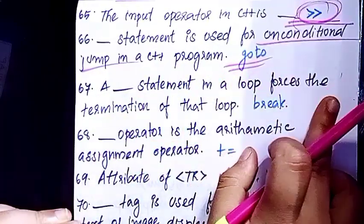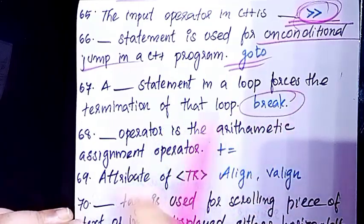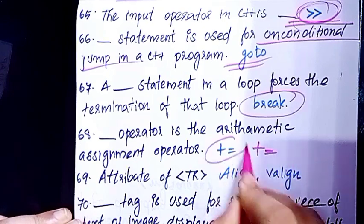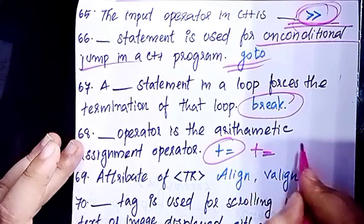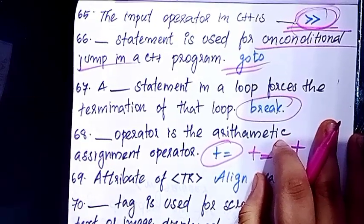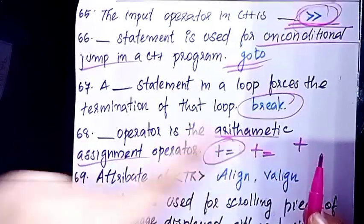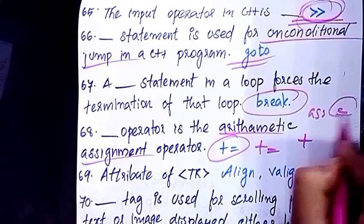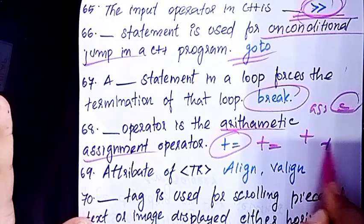A statement in a loop that forces the termination of that loop is the break statement. The arithmetic assignment operator — plus equal to — is called the arithmetic assignment operator. The assignment operator is equal to. It is written as arithmetic assignment operator: plus equal to.